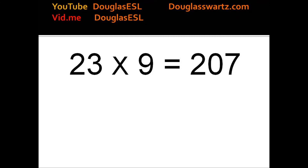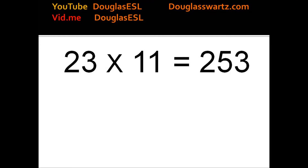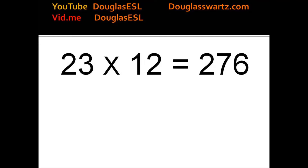23 times 9 equals 207. 23 times 10 equals 230. 23 times 11 equals 253. 23 times 12 equals 276.